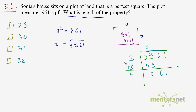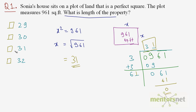This 61 comes down. So, 6-something times that something should be equal to 61. 61 times 1 is 61. So, 61 times 1 is 61. 61 minus 61 is 0. We have a 0 here. So, the square root of 961 is equal to 31. Hence, the length of the property is 31 feet. The correct answer is option C.